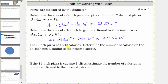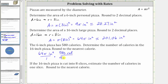The six inch pizza has 580 calories. Determine the number of calories in the 16 inch pizza, rounded to the nearest calorie. It's important to recognize that calories are proportional to the area of the pizza, not the diameter or the radius. We'll use the exact area of 64 pi square inches for the large pizza and multiply by the rate of 580 calories per nine pi square inches from the small pizza.